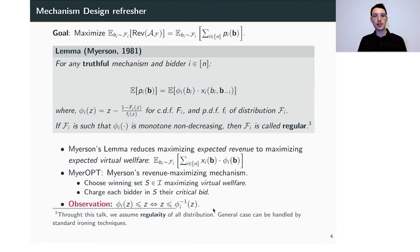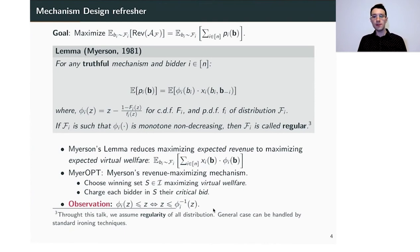Maximizing the expected revenue is defined as the expected sum of payments all bidders make to the mechanism. Myerson's Lemma is a very important tool for this, expressing the expected payment of bidder i as their expected virtual valuation, which is the function phi(b_i). If the distributions f_i are such that phi is monotone non-decreasing, we call those distributions regular. For the remainder of this talk we concern ourselves only with regular distributions; the general case can be handled by standard ironing techniques.